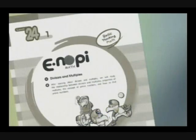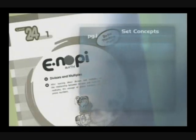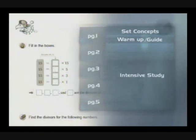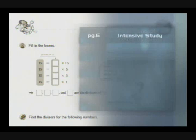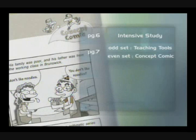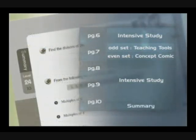Sets 17 through 24 of each level are the critical thinking math area. Skills to solve problems related to daily life are nurtured. One set is composed of 20 pages, includes the set concepts, warm-up or material, intensive study, teaching tools in odd number sets and concept comics in even number sets, intensive study, and finally the summary.